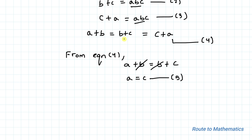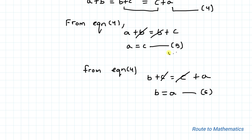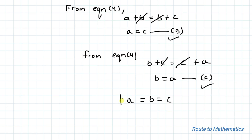Similarly, equating b plus c with c plus a from equation 4, the positive c cancels on both sides, giving us b equals a. Let's take this as equation 6. Now equating equations 5 and 6, we get a equals b equals c — the three variables are all equal.